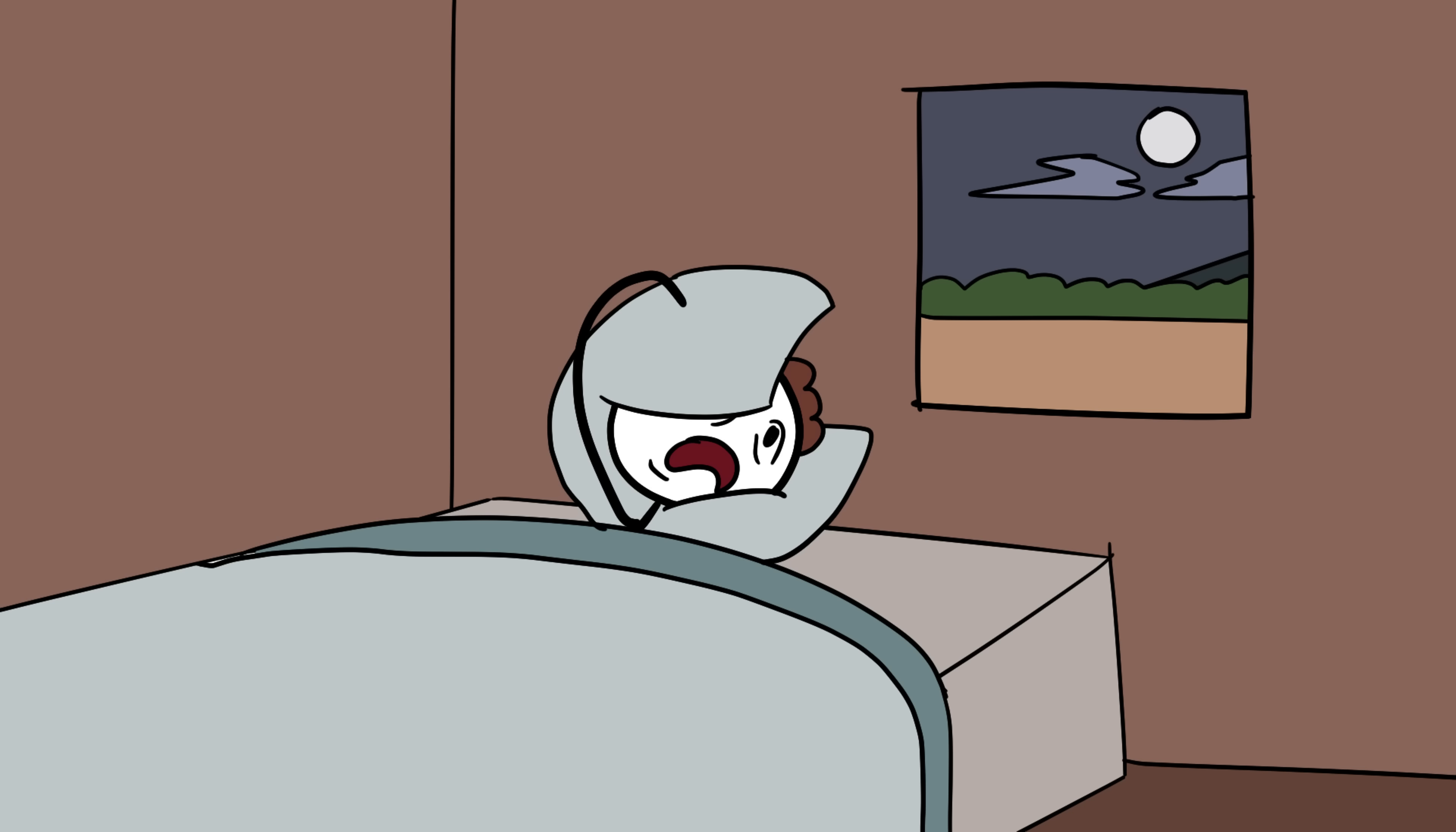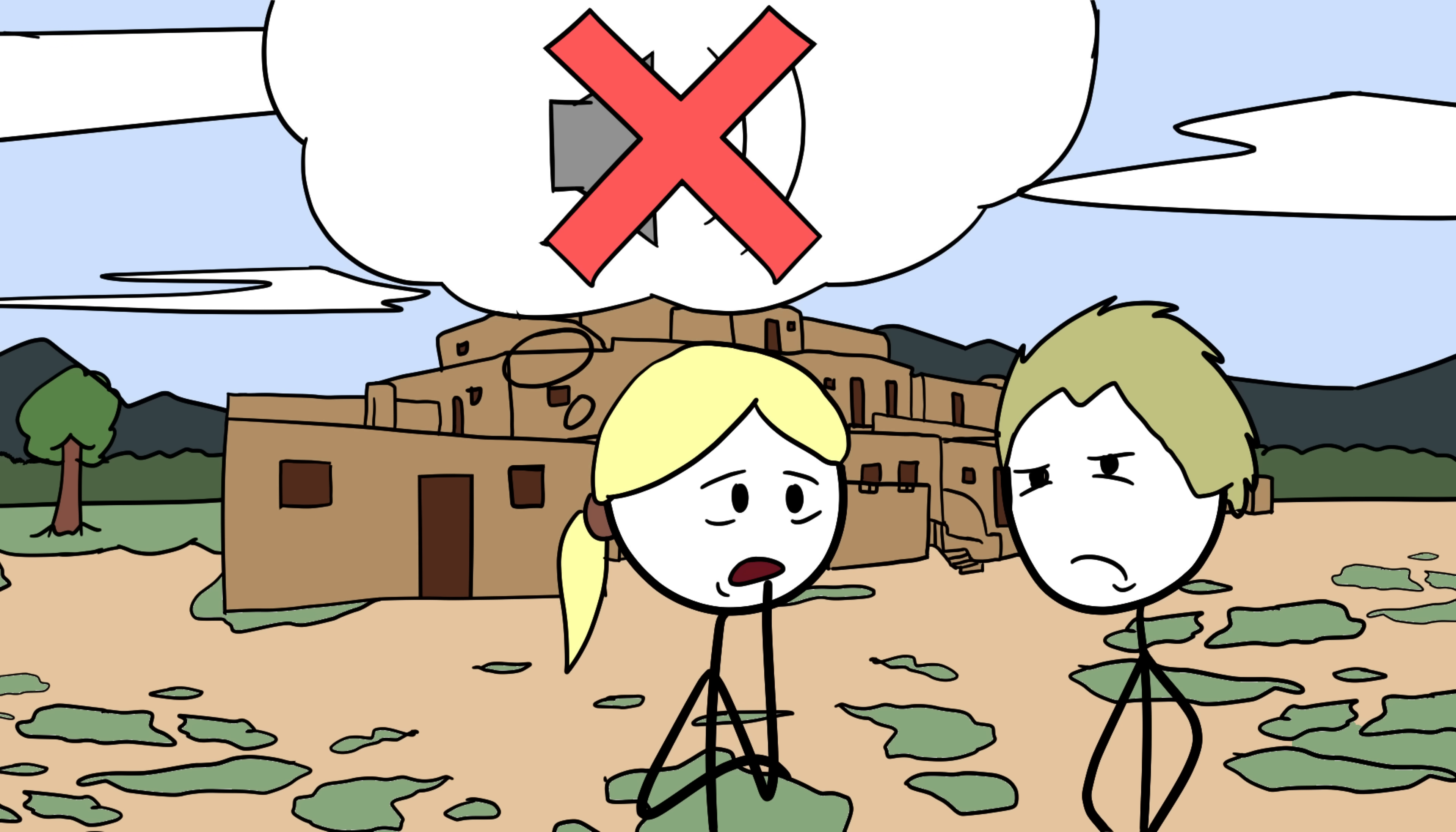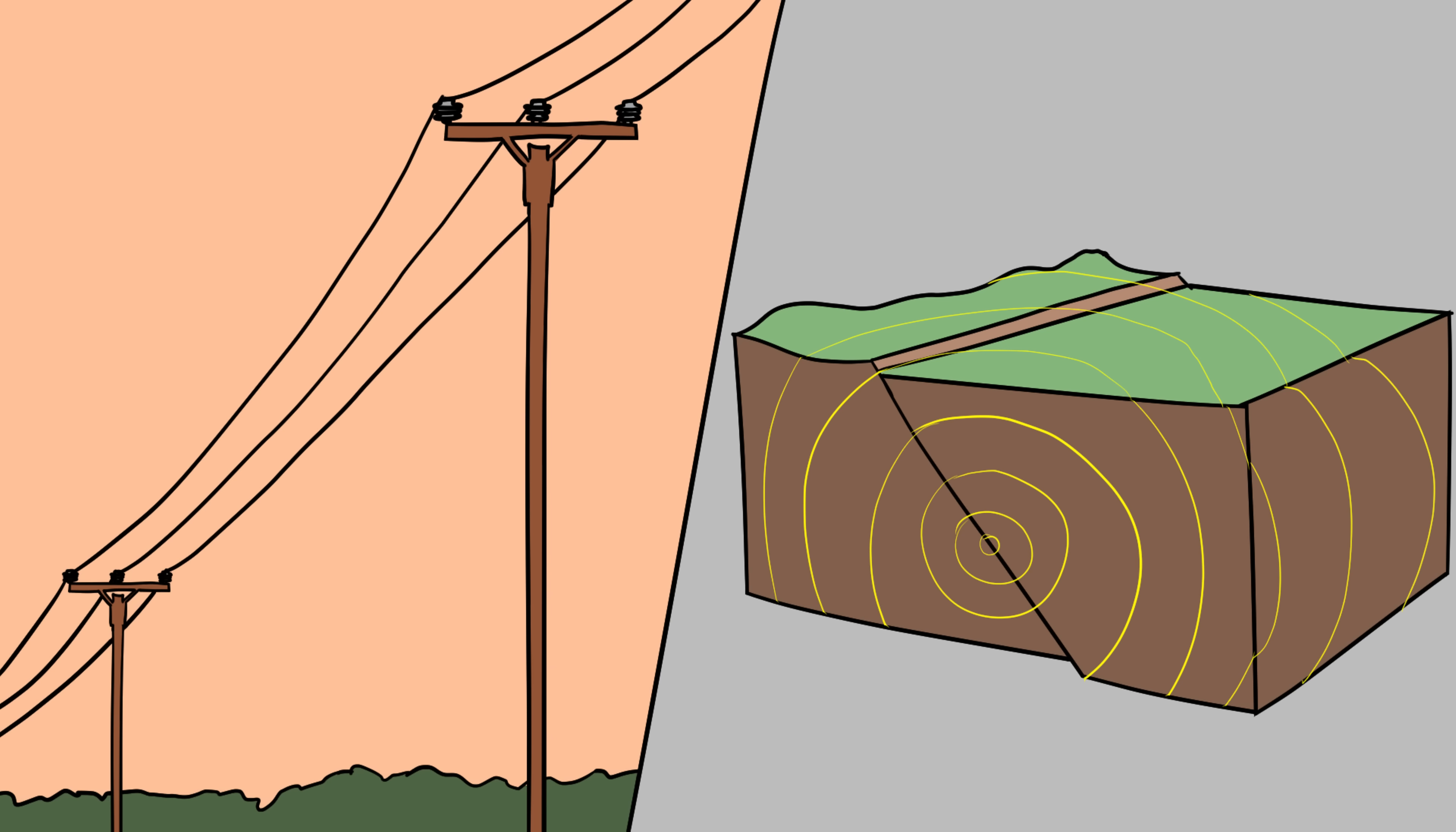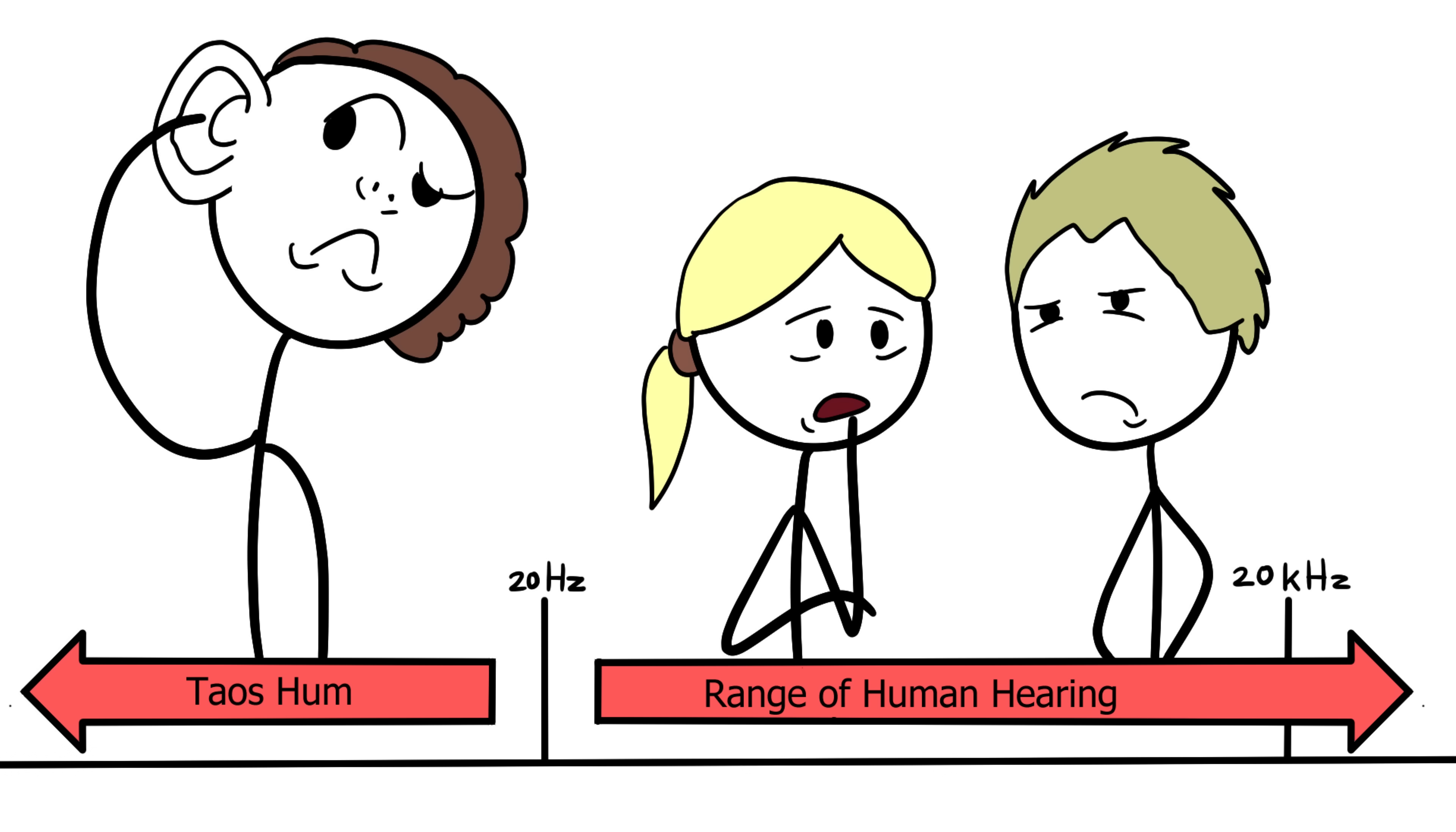The sound wasn't recorded clearly by microphones, and visitors often couldn't hear it at all, making it one of the most frustrating scientific mysteries out there. Scientists investigated everything from high voltage power lines to underground seismic activity, even possible secret military projects. None of the theories fully explained why only a small portion of people could hear it. Some researchers suggested it was a case of low frequency hearing sensitivity, where certain individuals' ears pick up sounds, others simply can't.